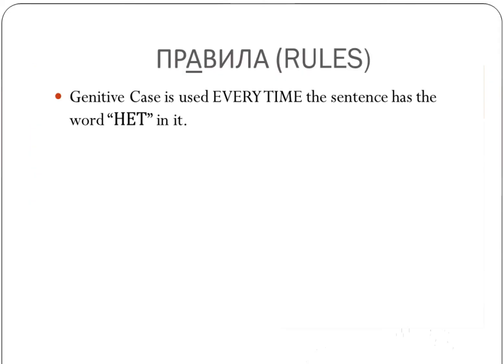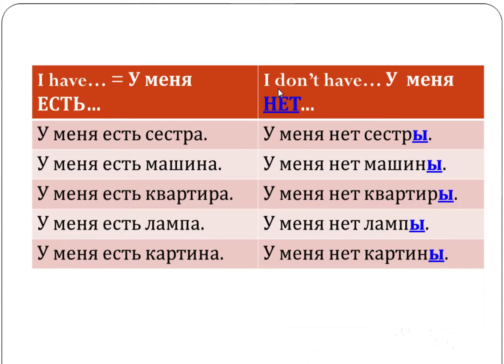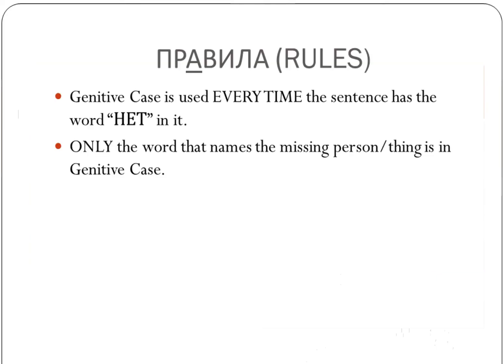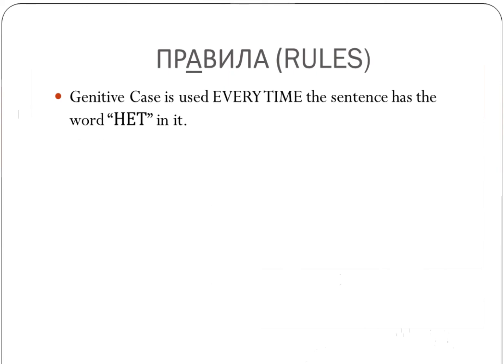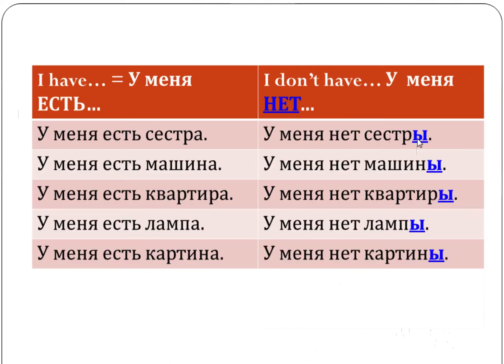So here are the rules. Genitive case is used every time the sentence has the word нет in it. All of these changes were triggered by us changing the word есть to нет, because нет is present in all of these sentences — that's why we're making the changes. Only the word that names the missing person or thing is in genitive case; it's not the whole sentence, just those words that represent things or people that are absent.